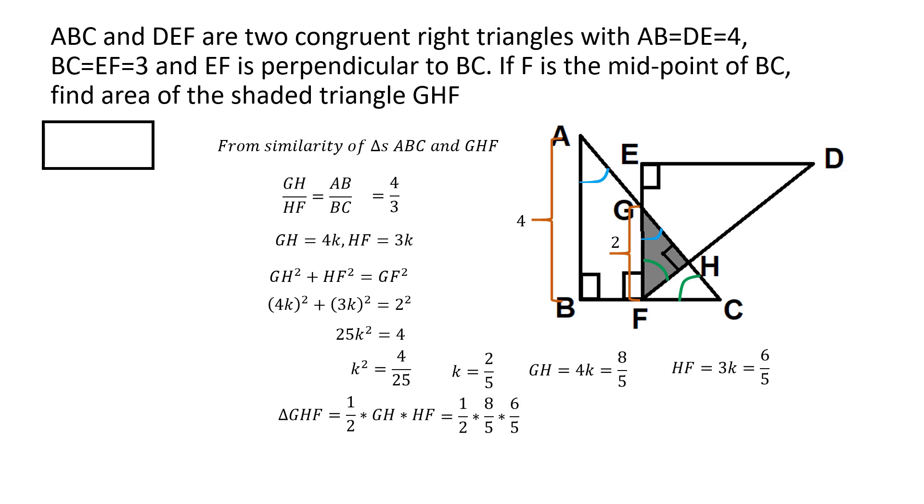And then if you substitute GH equal to 8 by 5 and HF equal to 6 by 5, you get the area as half multiplied by 8 by 5 multiplied by 6 by 5, which comes to 24 by 25. And then if you want to convert it into a decimal, you multiply both numerator and denominator by 4 in order to make the denominator equal to 100. So that gives you 96 by 100, which is 0.96. So the answer in terms of decimal will be 0.96, or you can provide a fraction or any equivalent form.